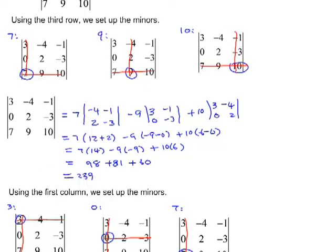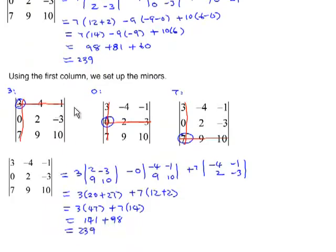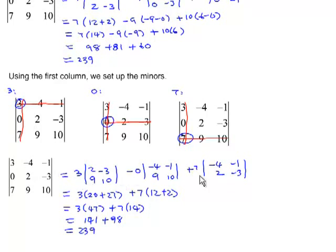You should also try using a column. Using the first column with entries 3, 0, 7: signs are plus, minus, plus. 3 times its minor (2, 9, negative 3, 10) = 3 times 47 = 141. The second entry is 0, so no calculation needed. 7 times its minor (negative 4, 2, negative 1, negative 3) = 7 times 14 = 98. Adding 141 plus 0 plus 98 gives 239 — the same result.